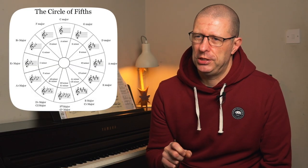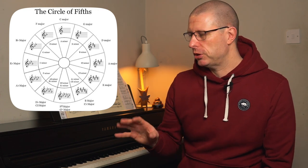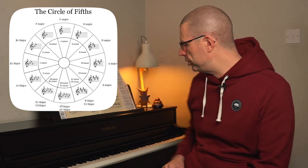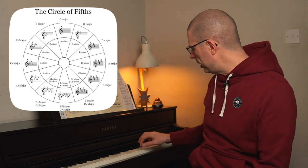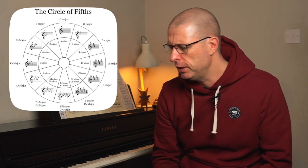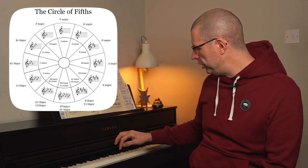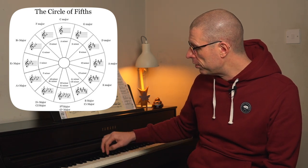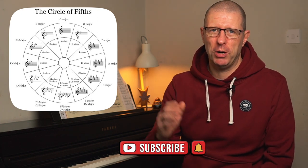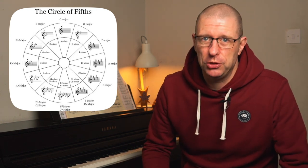Some of you may have heard it called the Circle of Fourths — it really depends on what direction you go on the piano. If we start on C and go up a fifth clockwise we go to G, then up a fifth again to D and it continues. However, if you go down the piano it changes to a Circle of Fourths: down a fourth gets you to G, down another fourth gets you to D, then A, and so on. It doesn't really matter — most people call it Circle of Fifths, but if you prefer 'fourths' then by all means use that. The tool is still there to be used.